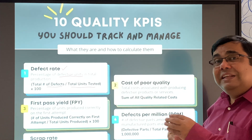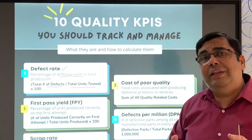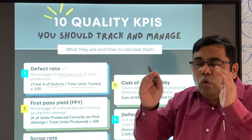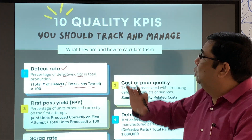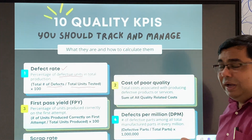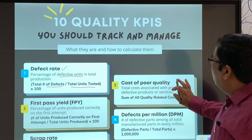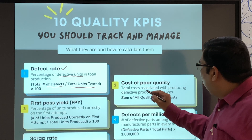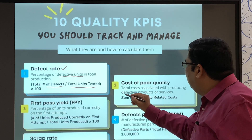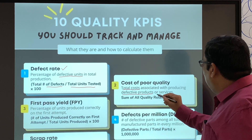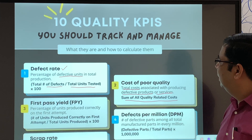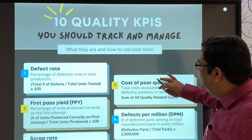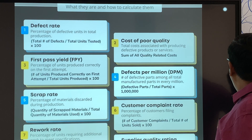Simple things, but this type of KPI is meaningful. I have seen companies where hundreds of KPIs are put — that is not required. You need to focus on quality perspectives and design KPIs around those. The second KPI is cost of poor quality — total cost associated with producing defective products or services. The sum of all quality-related costs is considered the cost of poor quality.